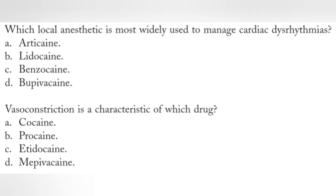Now 9th and 10th questions — these two questions are very easy but very important. First: which local anesthetic is most widely used to manage cardiac dysrhythmias? Options: articaine, lidocaine, benzocaine, or bupivacaine? Answer: it's option B, lidocaine.